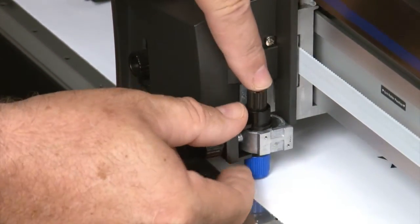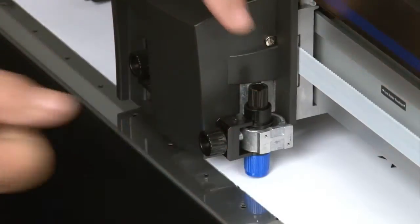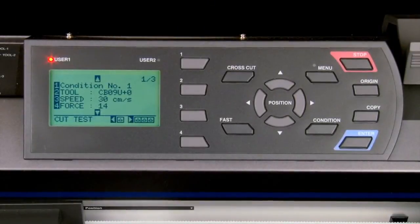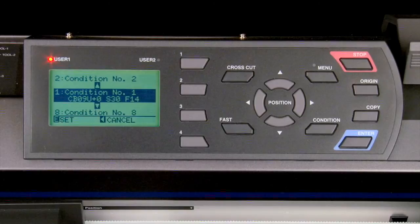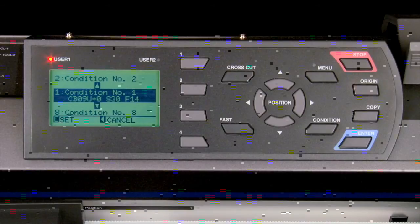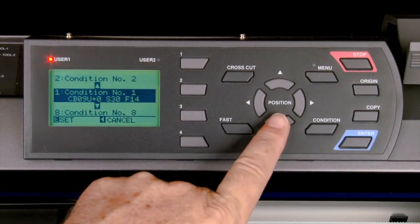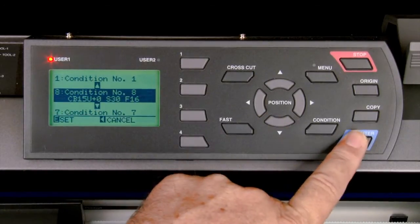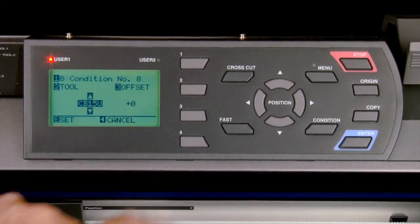Once again you'll know it's in the right slot because the tool will be right over the front channel. Next press the one key once again to change the condition to condition 8. The up or down arrow keys can be used to switch the conditions. Pressing enter will accept the settings. We'll set the tool to CB09U.